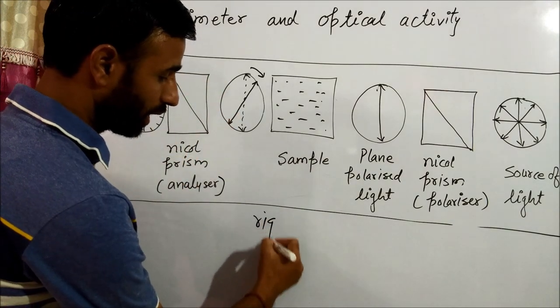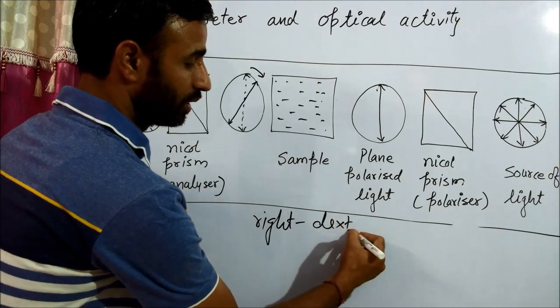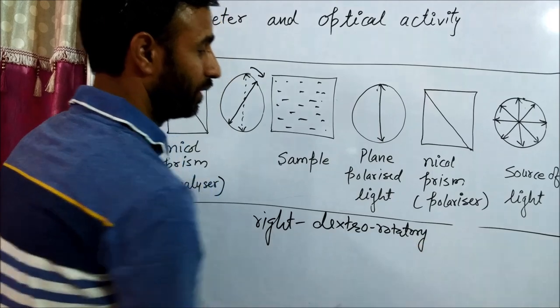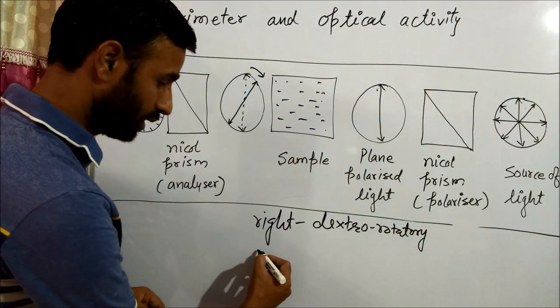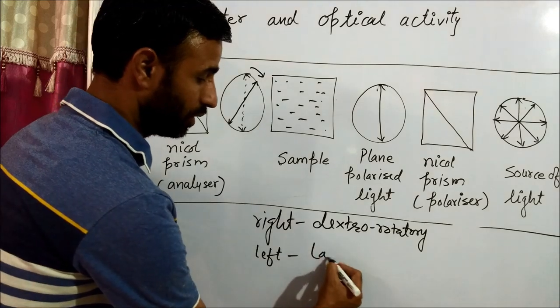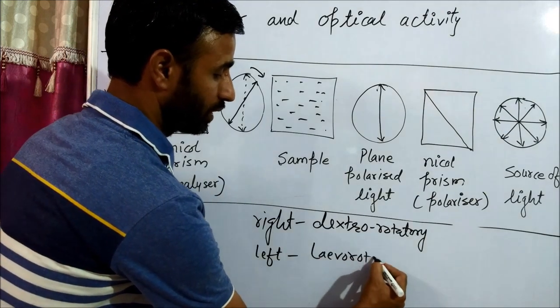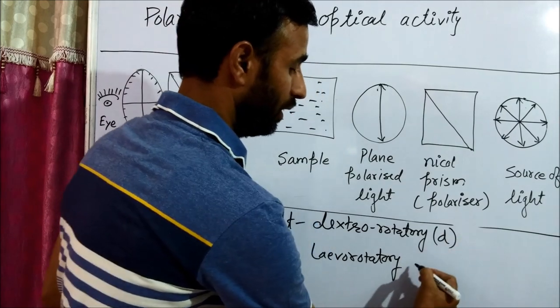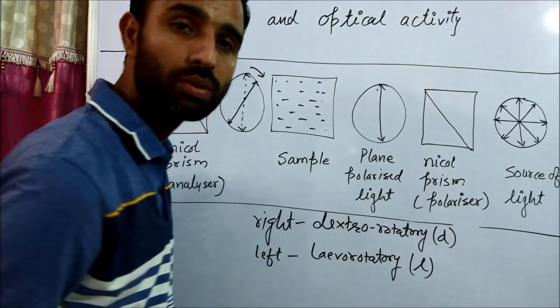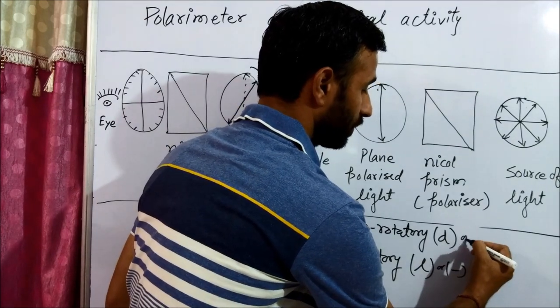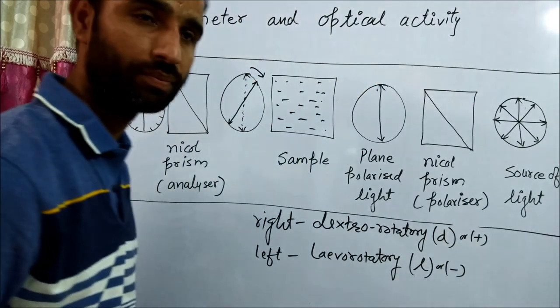If it rotates to the right, that means the substance is dextrorotatory. If this substance rotates the plane of the light to the left, this is called levorotatory. Dextrorotatory is denoted by small d, levorotatory by small l, or minus or plus.